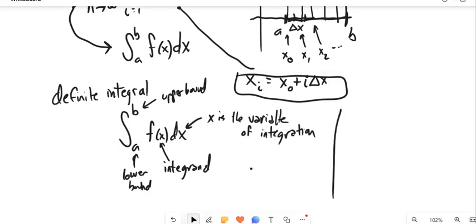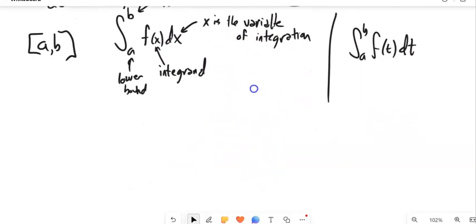And the dx, this means with respect to x. So it tells us what our variable of integration is. So this tells us that x is the variable of integration. If I wanted a different variable to be my variable of integration, I would just use a different variable. I could say dt with respect to t. F is continuous over the interval AB, it's going to be integratable over that.